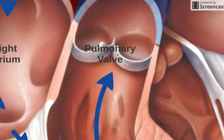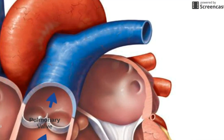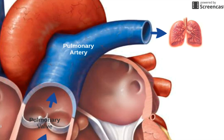The pulmonary valve then opens to allow that blood to flow into the pulmonary artery. The pulmonary artery then carries the blood to the lungs. Remember that the blood so far has no oxygen and instead has carbon dioxide. When the blood cells reach the lungs, they drop off the carbon dioxide to pick up oxygen.